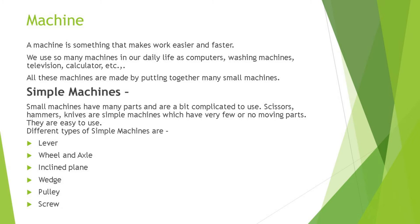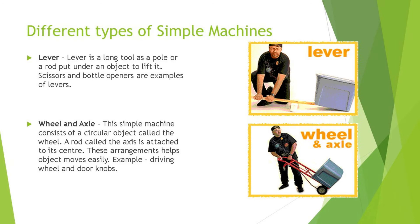Firstly, we will discuss the lever. A lever is a long tool such as a pole or a rod placed under an object to lift it. Scissors and bottle openers are examples of levers. In the picture, you can see a big bucket being moved with the help of a long wooden rod, making it easier to move. A simple machine that turns around a fixed point is called a lever.